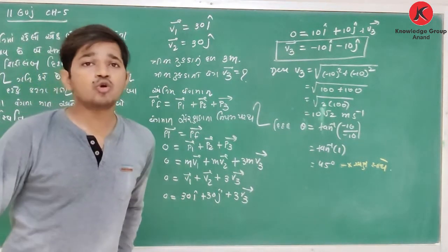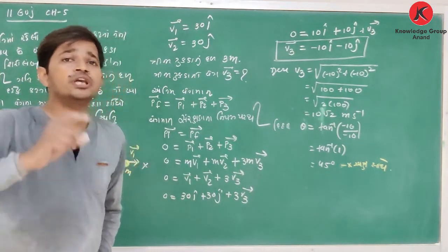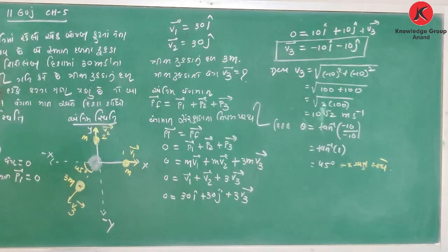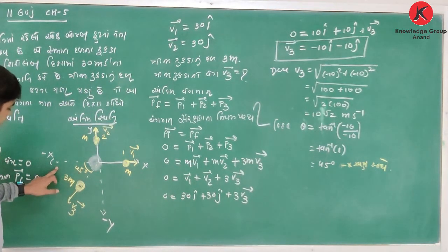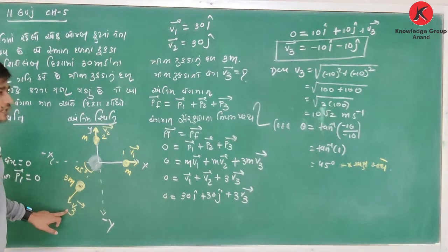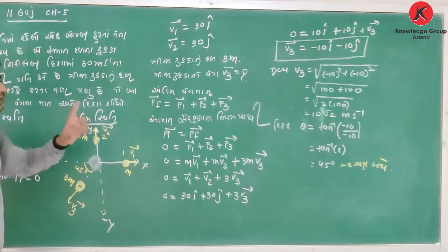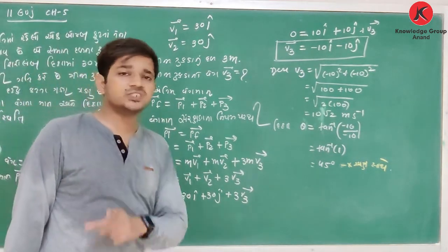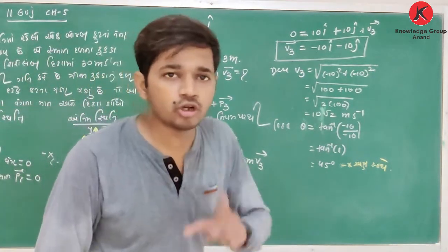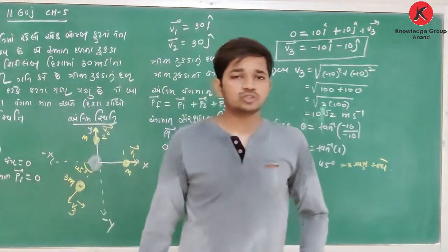How many times do you have to make a question? 20 degree, 10 root 2, 3, 4, 2, 3, 3, 4, 3.